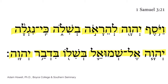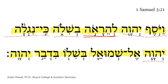The overall translation for today is: 'and then the Lord added to a causing to see' — or we might say, 'the Lord caused an appearing' once smoothed out. 'In Shiloh' is the prepositional phrase. So: 'for the Lord was revealed to Samuel in Shiloh by the word of the Lord.'